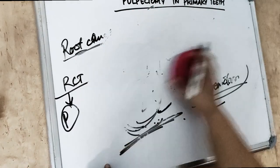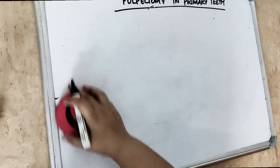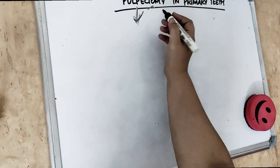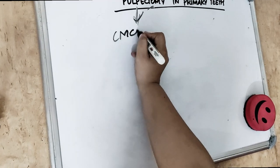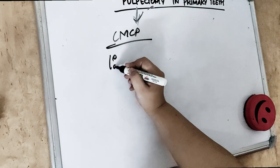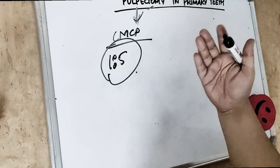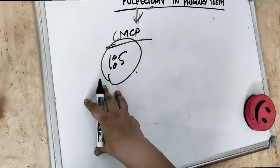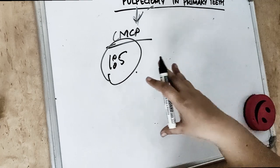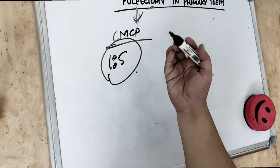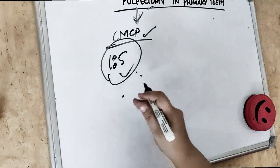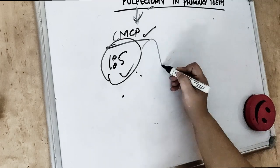Then a cotton pellet moistened with CMCP paste — camphorated monochlorophenol — is placed. We also use a 1-to-5 concentration of Buckley's formula, which we have already studied in previous videos on pulpotomy. The moistened cotton pellet with either of these pastes is placed, and then the root canals are sealed with zinc oxide eugenol (ZOE) cement.